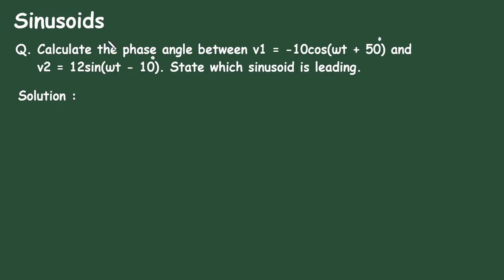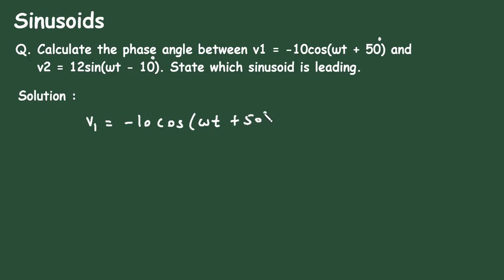In this video, we will see an example on sinusoids to calculate the phase angle between V1 and V2, and also state which sinusoid is leading. First of all, we will write what is given: V1 is equal to minus 10 cos(ωt + 50°) and V2 is equal to 12 sin(ωt - 10°).